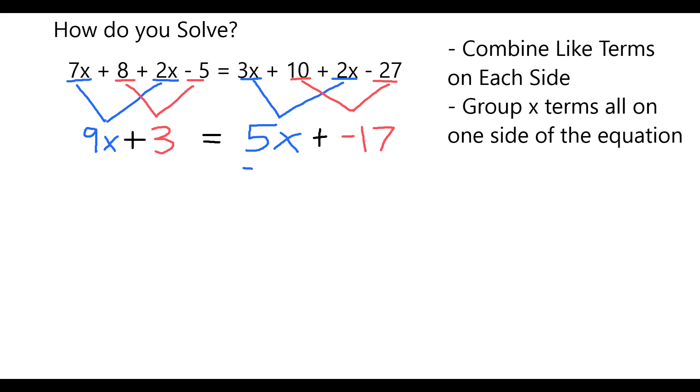Now that I have combined like terms and simplified things a little bit, I can group all my x's on one side of the equation by subtracting 5x from both sides of the equation. Remember, anything I can do to one side of the equation, I can do to the other.